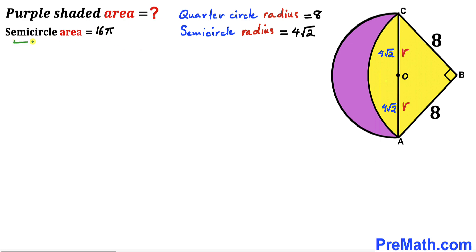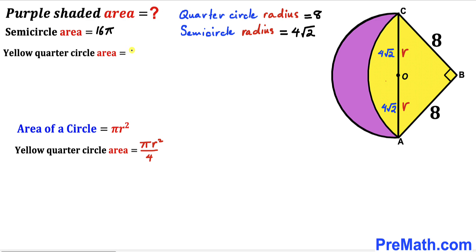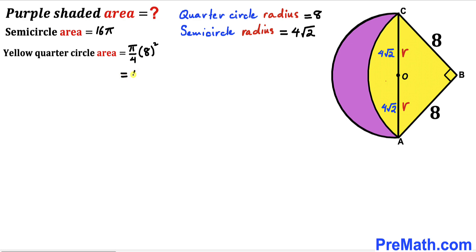Now let's calculate the yellow quarter circle area. Using A = πr²/4, with radius 8: π/4 × 8² = π/4 × 64 = 16π. So the quarter circle area is 16π square units as well.